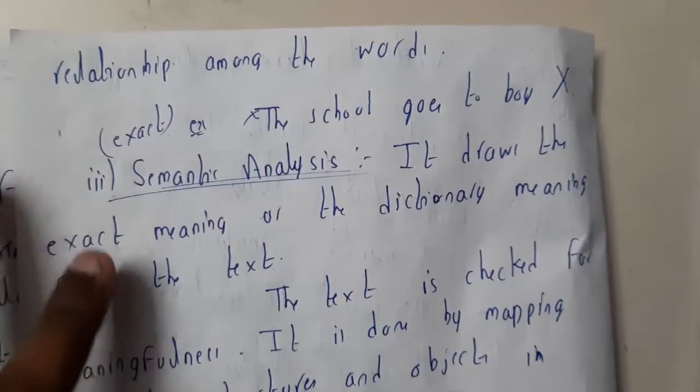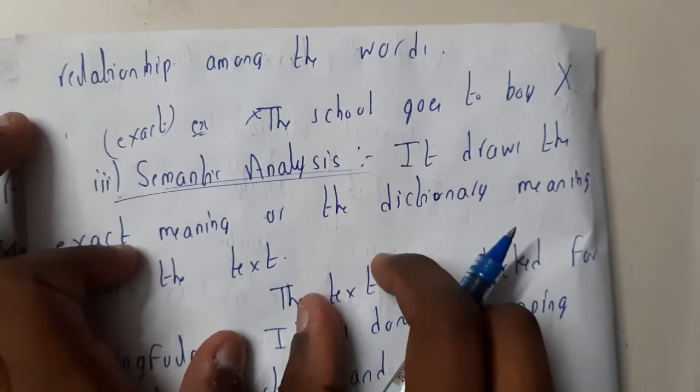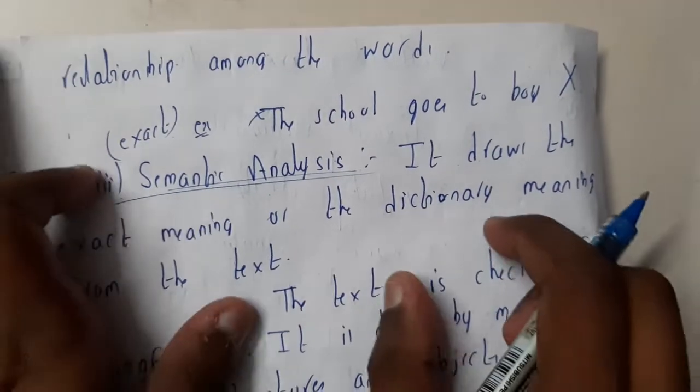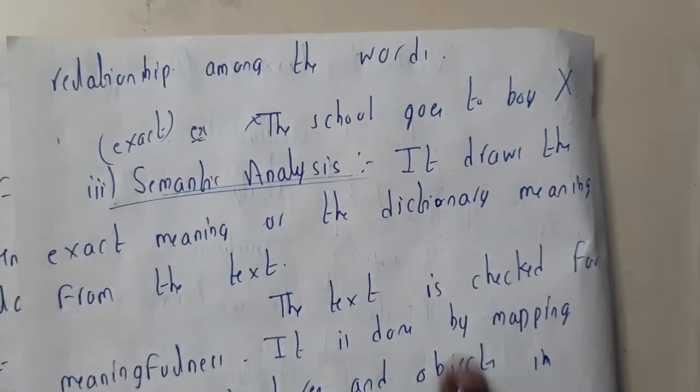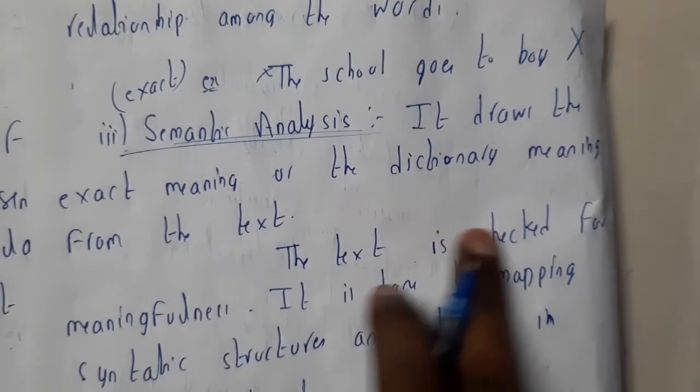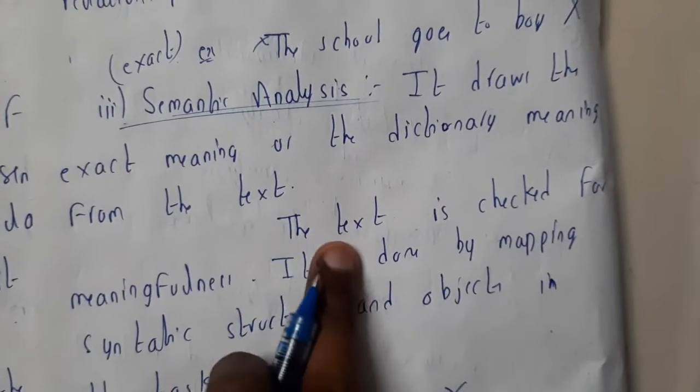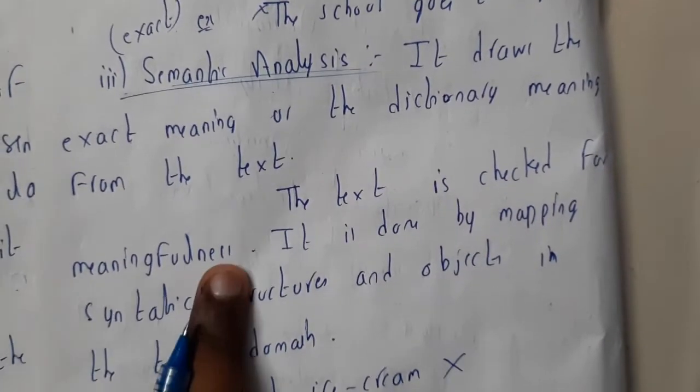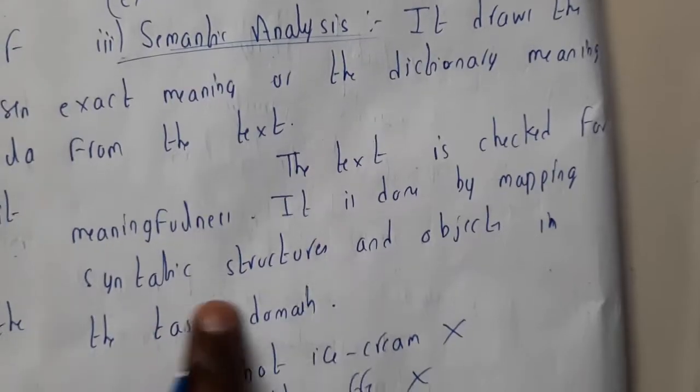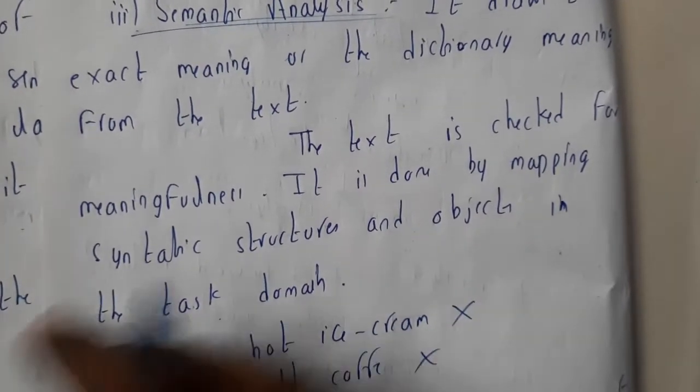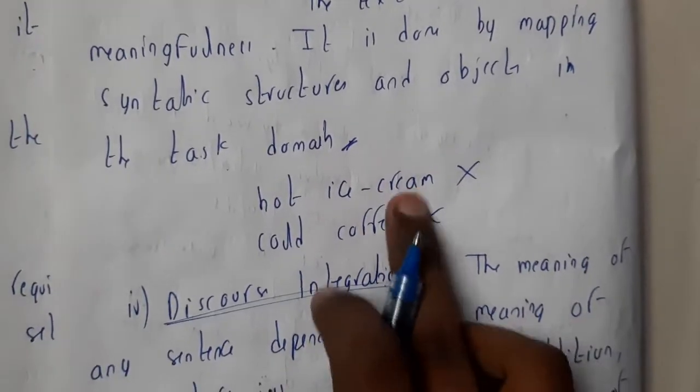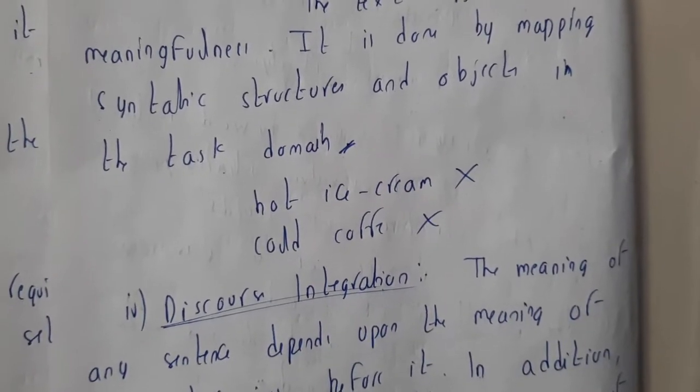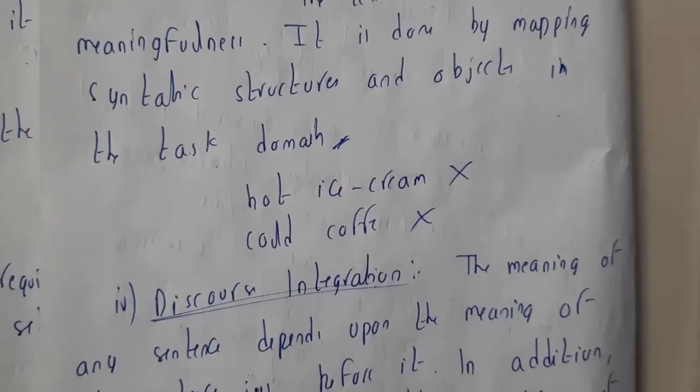Whereas semantic—semantic means it will check the exact dictionary meaning. Like, for some keywords we will not have some things, so those kind of things could be rejected. It draws the exact meaning, the dictionary meaning from the text. The text is checked for meaningfulness. It is done by mapping syntactic structures and objects in the task domain. Something like hot ice cream will be rejected, cold coffee will also be rejected. So these kind of problems will be facing there.